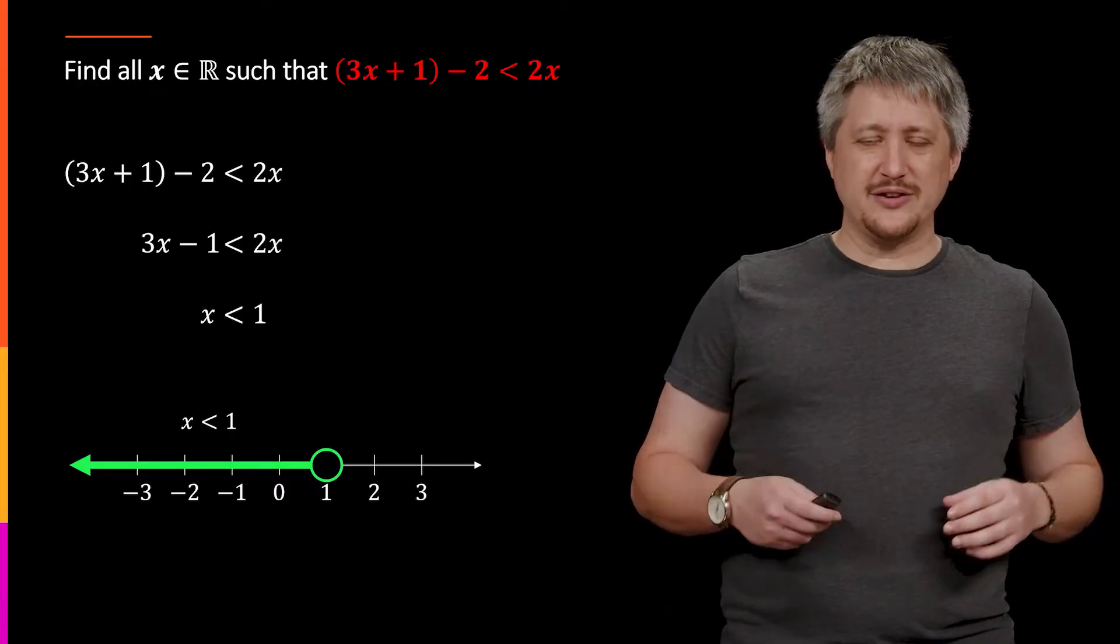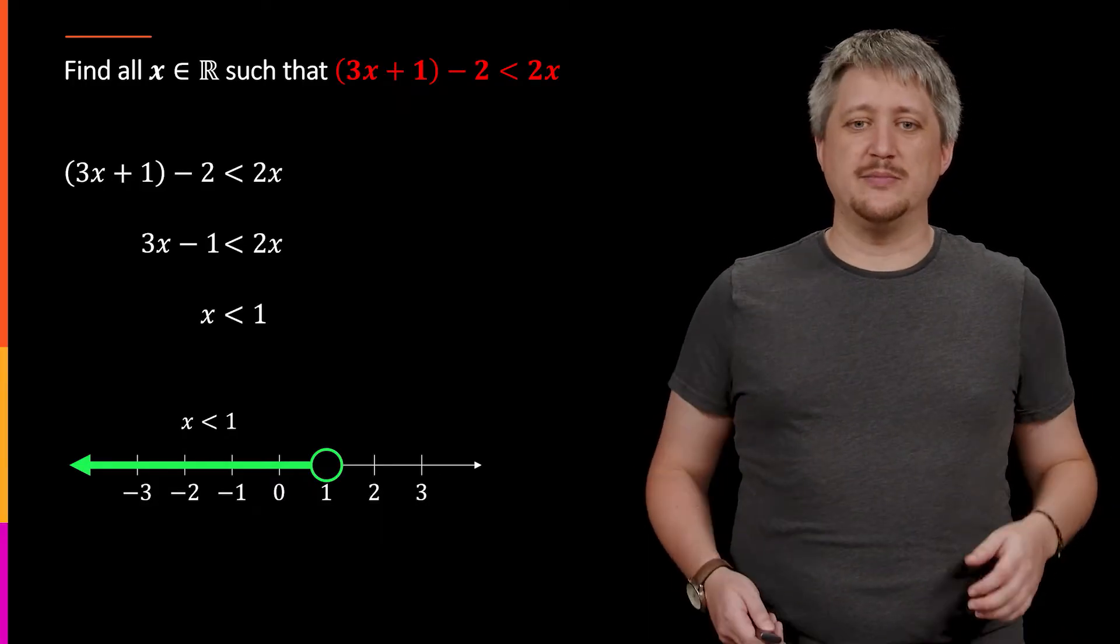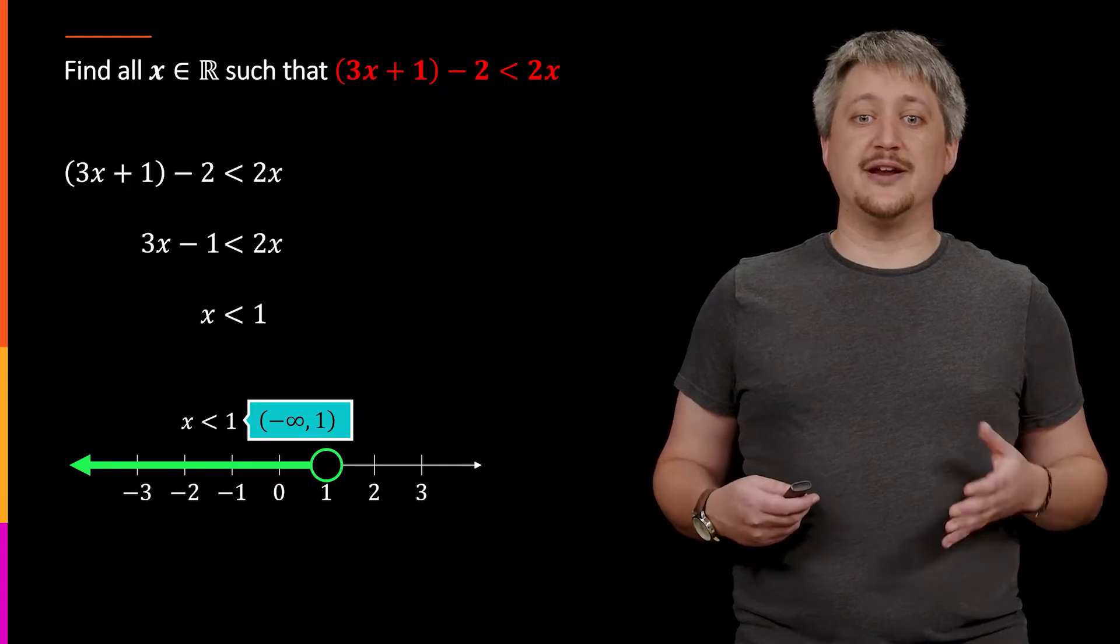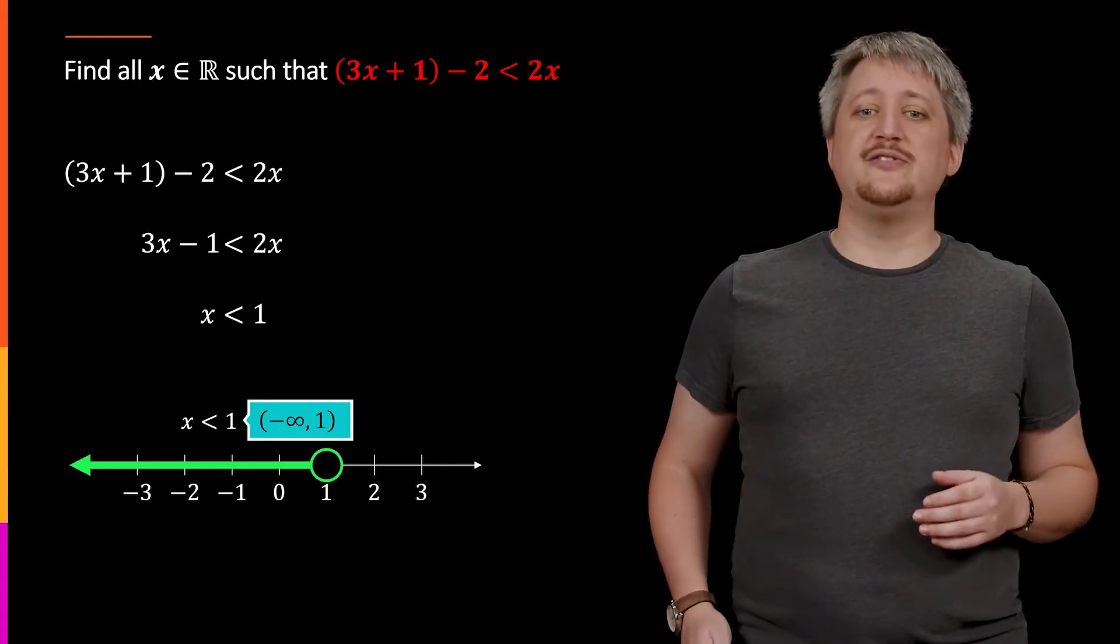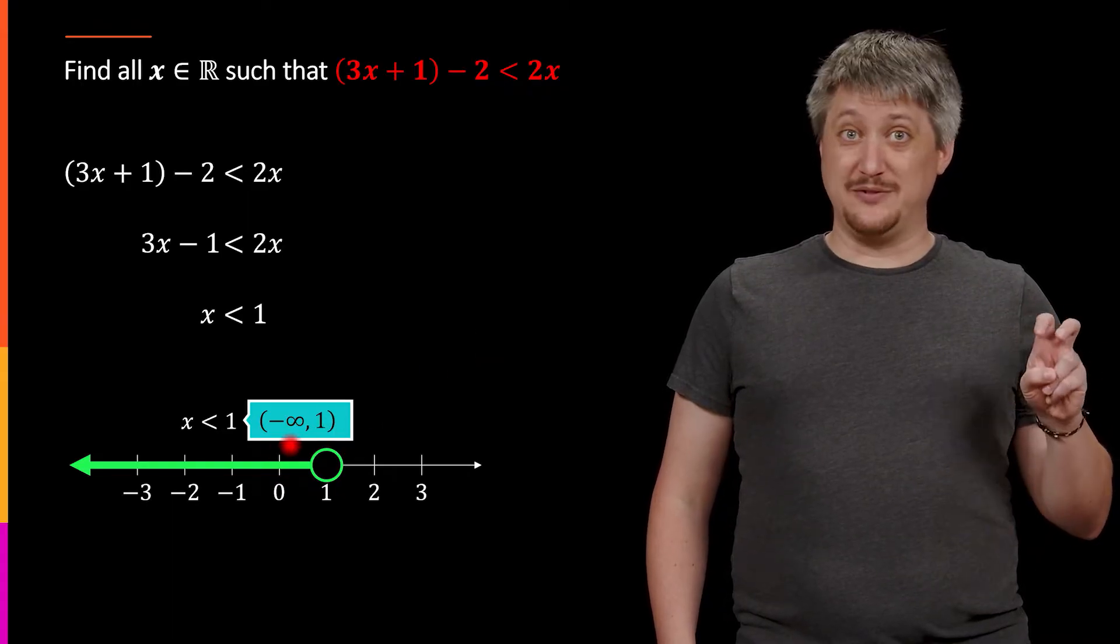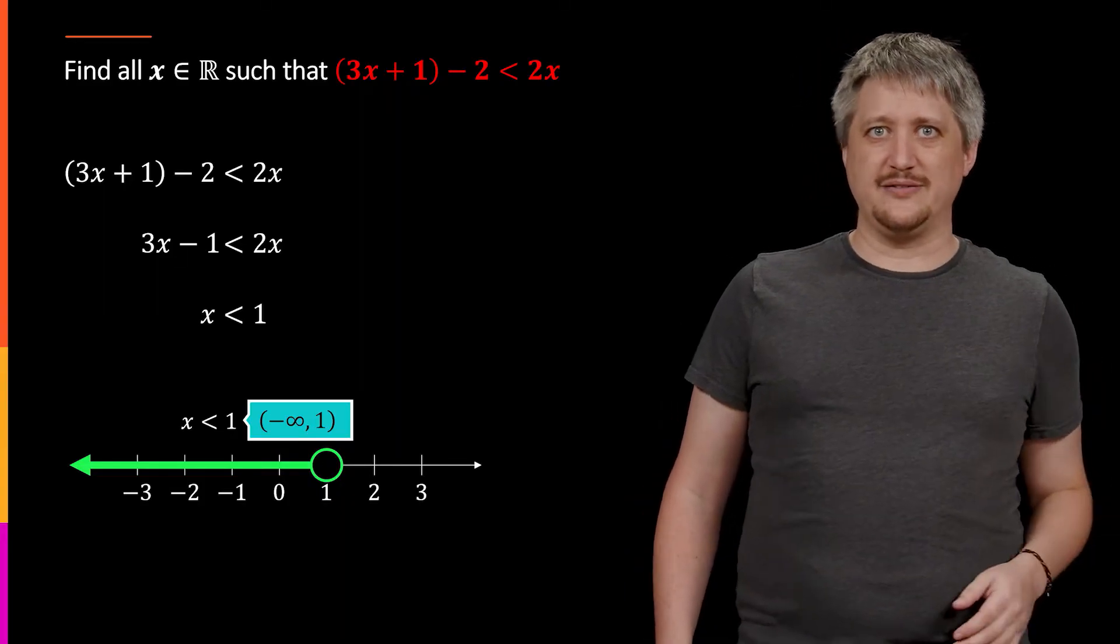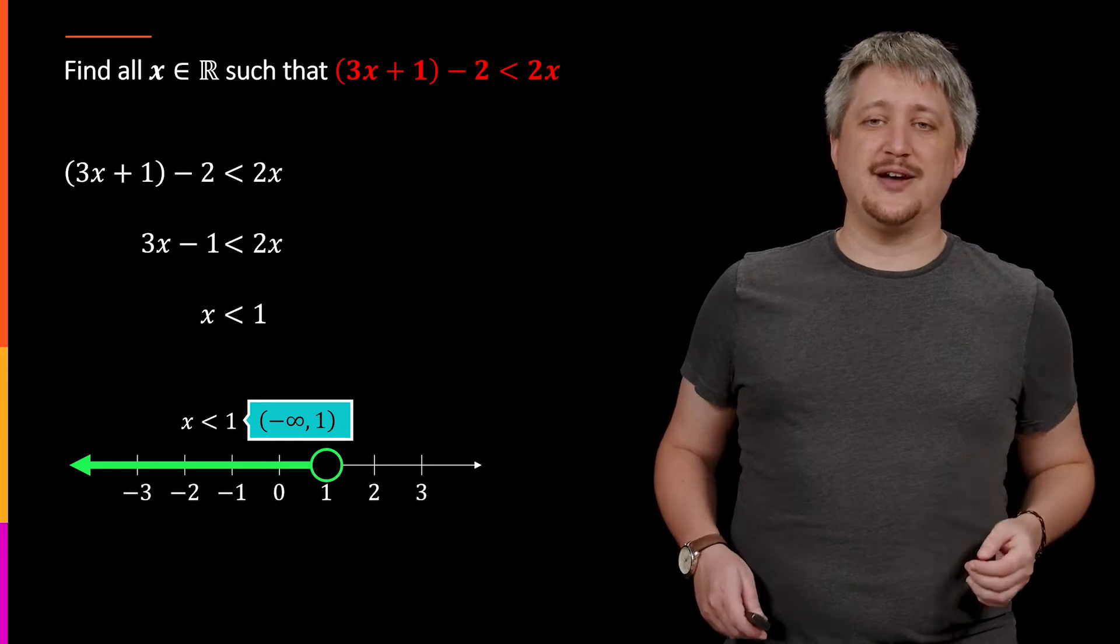And last but not least, we have the inequality form, we have this solution set graph, this number line form. We could also do this as that interval form. Everything to the left of 1, not including 1, so I'm going to use a parenthesis, and I can go all the way to negative infinity, meaning that anything in the negative set works. Negative infinity is not really a number. It's just saying anything out that direction is fine.